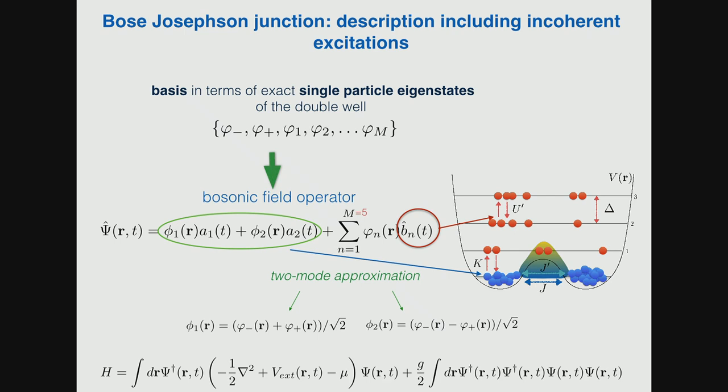So what we have is condensate in a double-well potential. This is how Bose-Josephson Junction is realized in experiments. What we do initially at time zero is just quench the Josephson Junction, the coupling between the wells. Then we see if the system thermalizes or not and how.